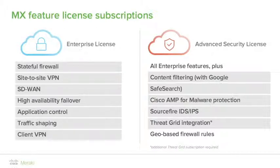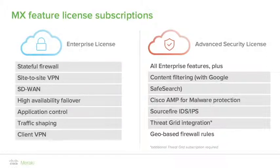The slightly more expensive Advanced Security License includes all of the enterprise features plus a bundle of additional security subscription services. These include Google Safe Search and YouTube for Schools, Cisco Advanced Malware Protection with its Global Threat Intelligence Network, Cisco Sourcefire IDS and IPS to detect and protect traffic between the internet and the LAN as well as VLAN to VLAN. Threat Grid Behavioral Monitoring provides sandbox execution of potentially malicious files, and an IP Geolocation Database enables geographical-based firewall rules.